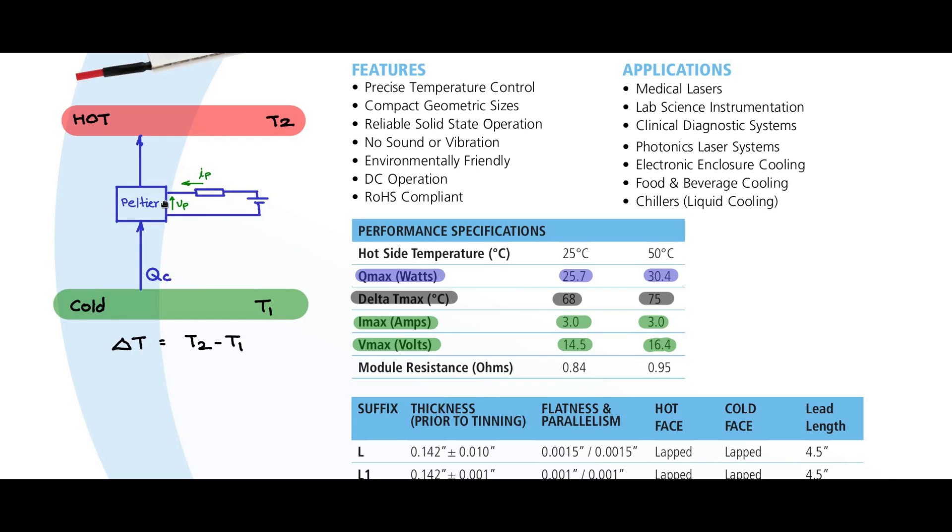Now, if you consider this Peltier element, let me erase this and then connect a resistance here. Internally there is a resistance across the terminals of the Peltier and that resistance, let me call it RP, the Peltier resistance. This is the module resistance as indicated in the datasheet and that is given to be around 0.84 to 0.95 ohms depending upon the hot side temperature.